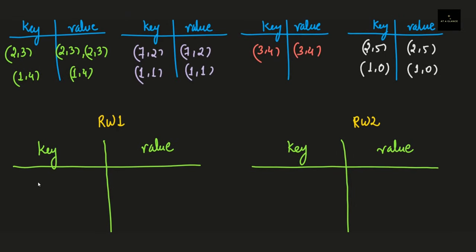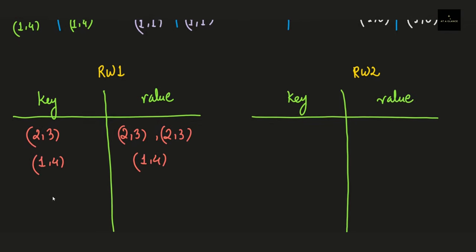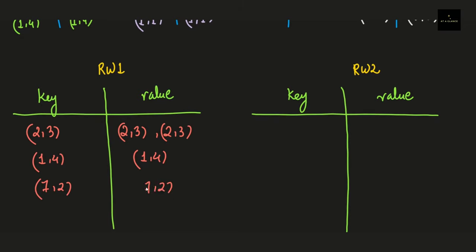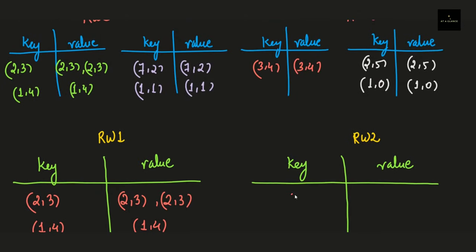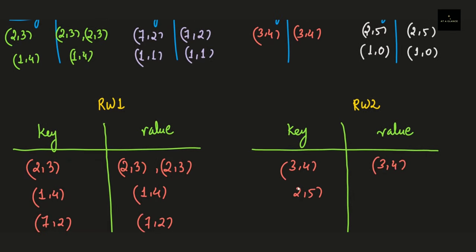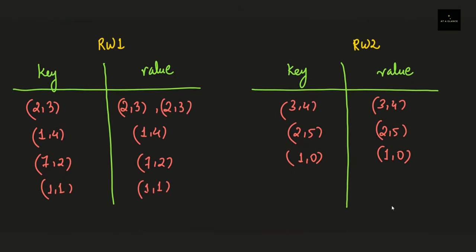Once we are done with the swapping, we again make a single key-value table comprising the same tuples with no redundancies. In the first reducer worker, the tuples are 2,3 then 1,4 then 7,2 then 1,1. We are done forming a single key-value table for reducer worker 1. Similarly we do it for reducer worker 2. Note that we are not getting any redundancies, so the total number of distinct tuples is preserved.